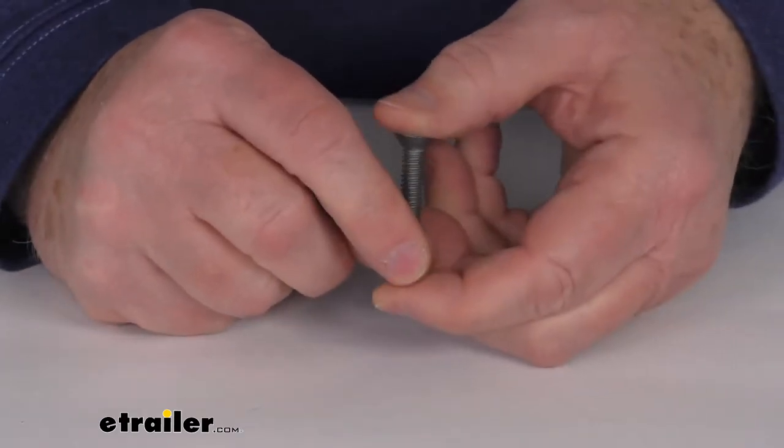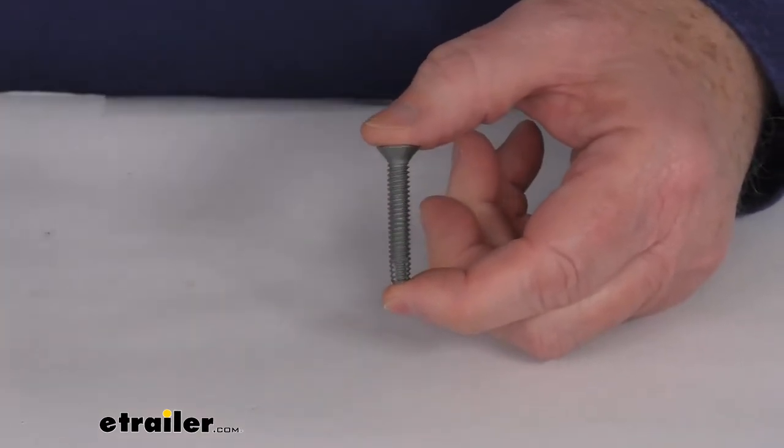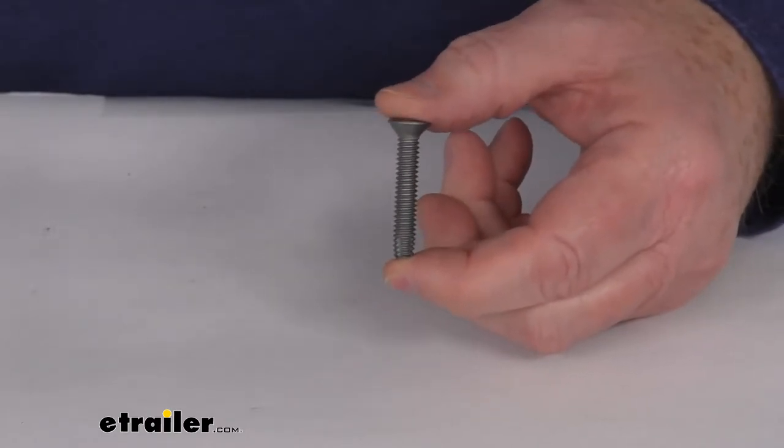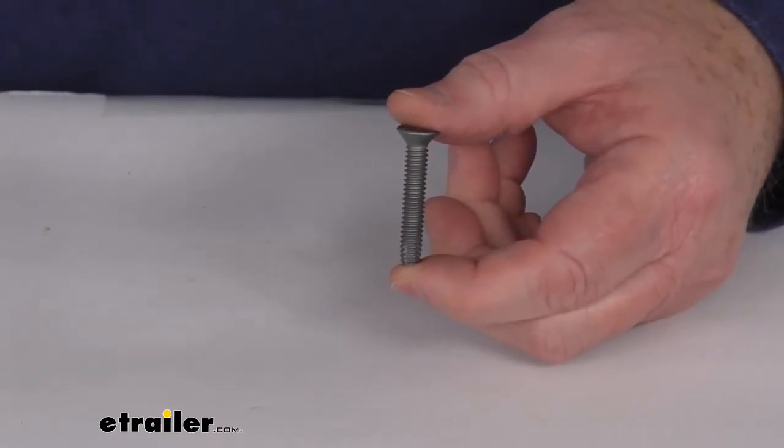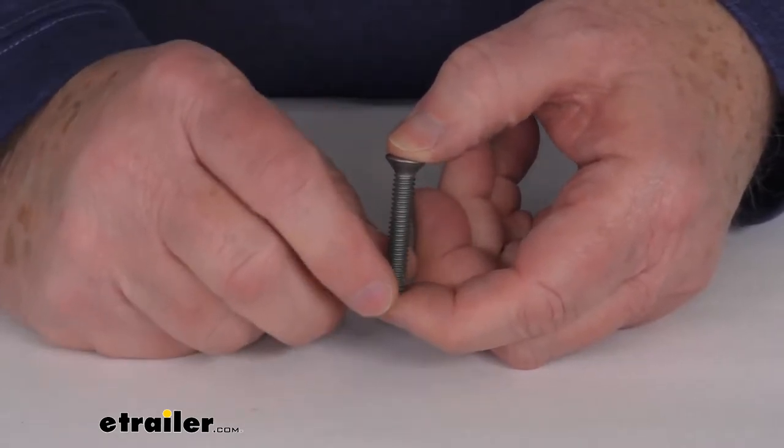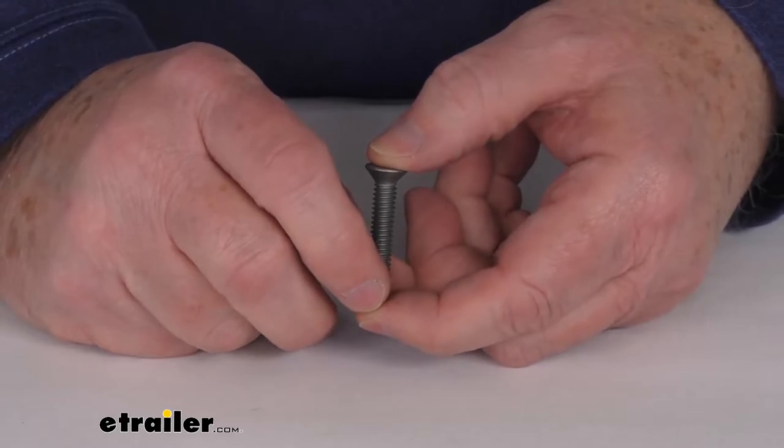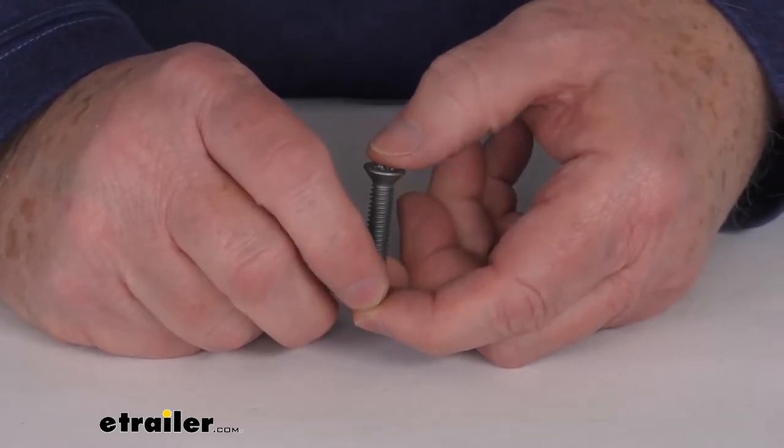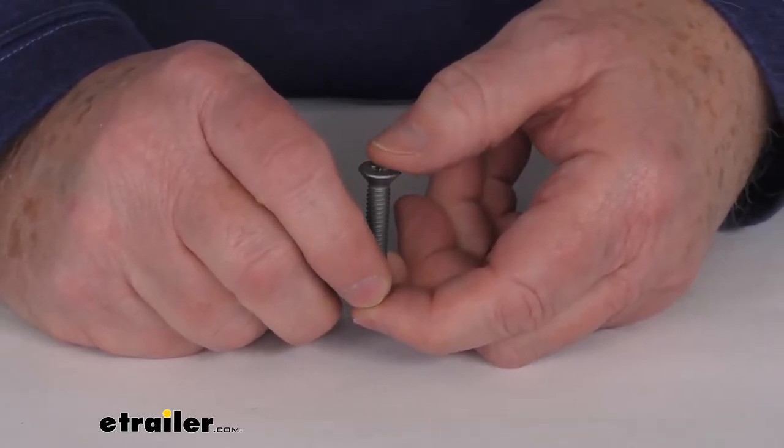Now this screw is designed specifically for ACQ treated wood, which stands for alkaline copper quaternary wood. Because this ACQ treated wood is very corrosive, these screws have been made with an approved plating material that's less expensive than stainless steel screws and have been shown to outperform galvanized screws.